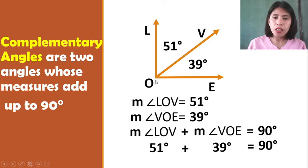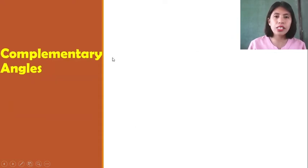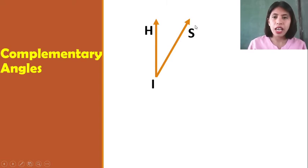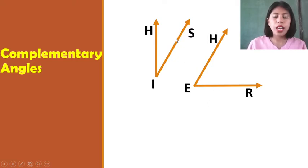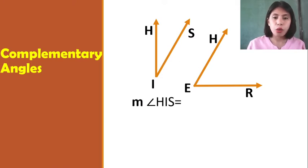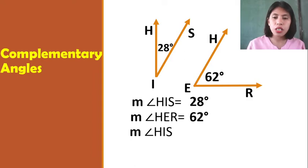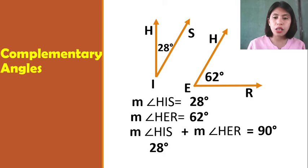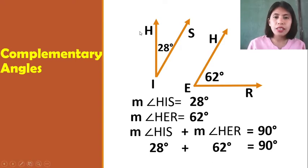Therefore, Angle L-O-V and Angle V-O-E are complementary angles. We can say two angles are complementary angles if the sum of their angle measures is equal to 90 degrees. For example, measure angle H-I-S is 20 degrees and measure angle H-E-R is 62 degrees. Using the working equation: measure angle H-I-S plus measure angle H-E-R equals 90 degrees. Since 20 degrees plus 62 degrees is not 90 degrees — but therefore, H-I-S and H-E-R are stated as complementary angles.